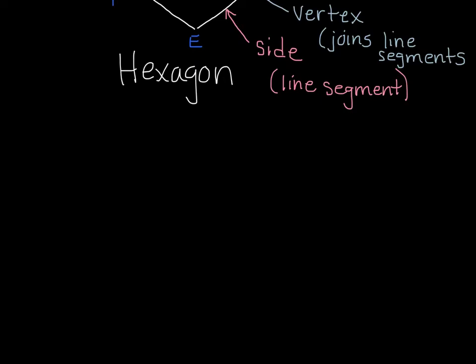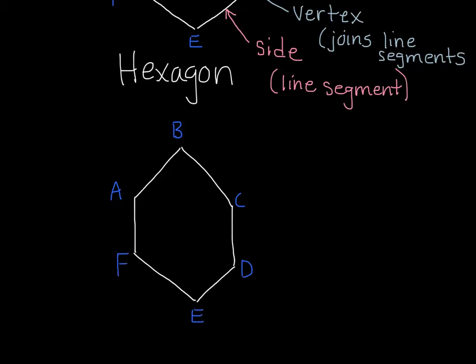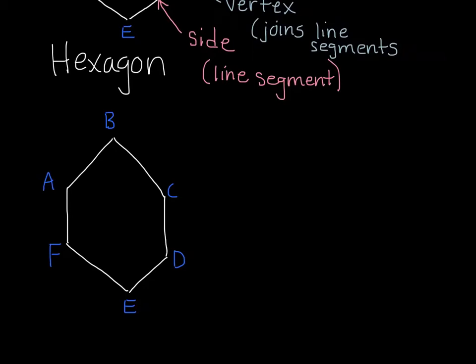Now there are also some other things we can look at when we're talking about a polygon. So let's get another hexagon here. We can say again that this is A, B, C, D, E, F. So we could say that AB is one of the segments. This would be segment AB. And I could say that that is next to the segment BC. So those are segments that make up sides of the polygon itself.